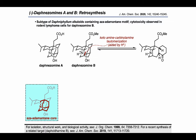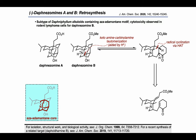This approach has been previously used by Heathcock and Lay in their work on the lycopodium alkaloids. The authors continued their retrosynthetic analysis by proposing a radical cyclization, which they thought might be possible using appropriate hydrogen atom transfer conditions. They further simplified by proposing an olefination to construct the tri-substituted olefin, as well as an oxidation to set up the cyclohexenone motif necessary for the subsequent radical conjugate addition step.